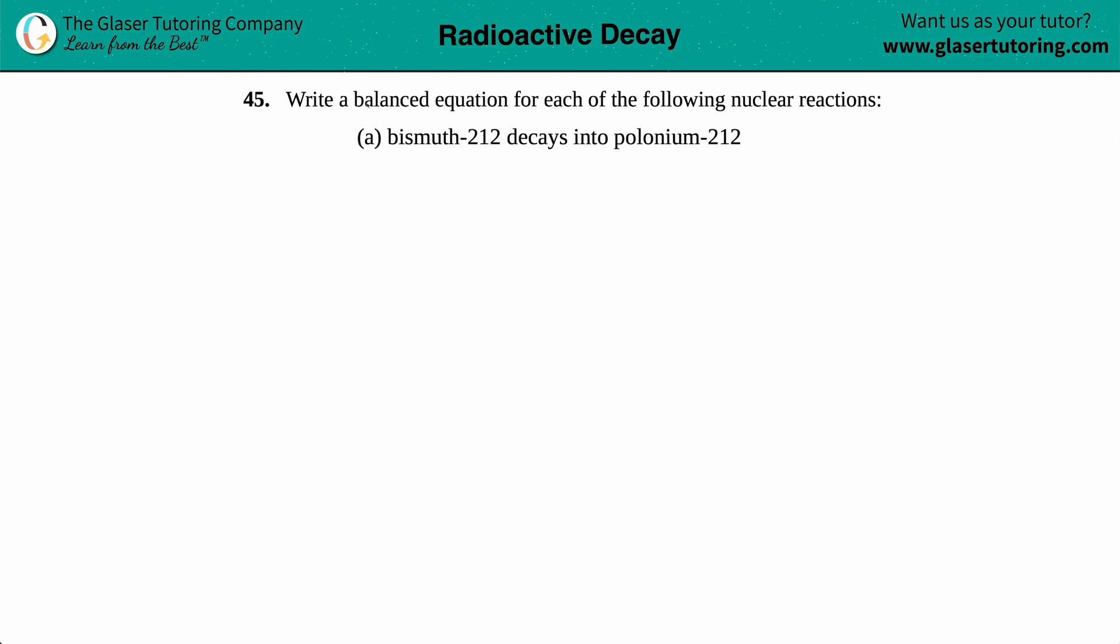Number 45: Write a balanced equation for each of the following nuclear reactions. In this case, we have to write an equation for bismuth-212 decaying into polonium-212. These will be simple, right? All we got to do is write a balanced equation.